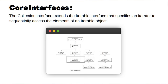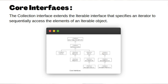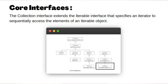Queue is extended by Deque. Set is extended by SortedSet, which is extended by NavigableSet. There is also a Map interface, which is extended by SortedMap and then NavigableMap. One important thing to note: the Map interface does not extend the Collection interface like List, Queue, or Set — it is separate, and we'll see why.